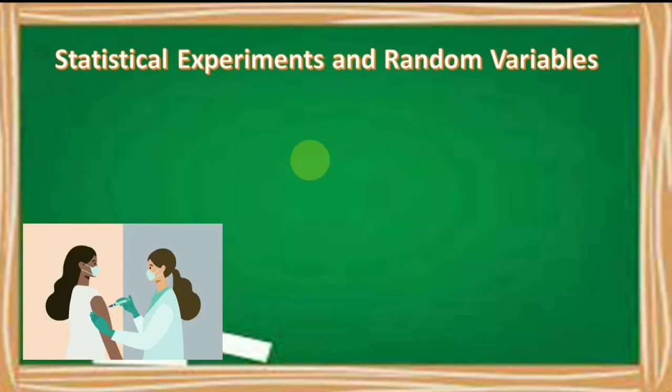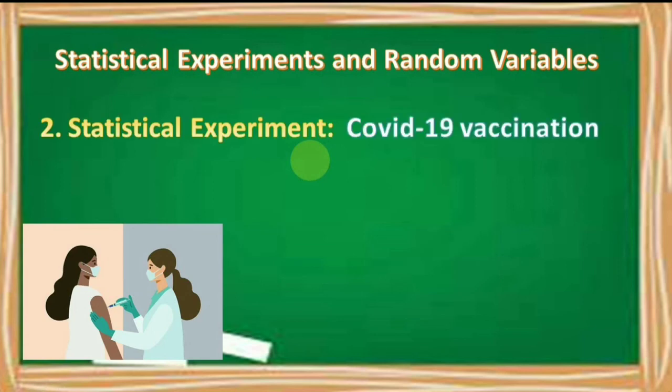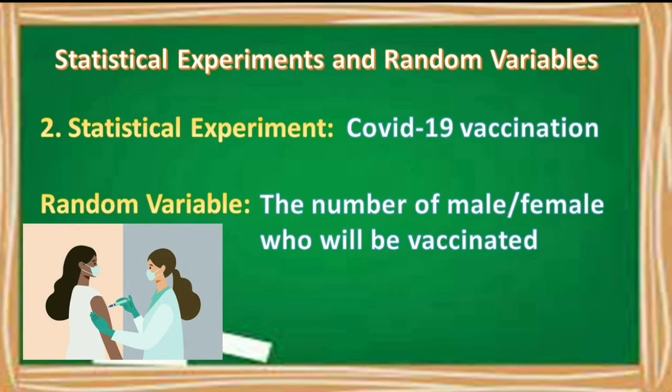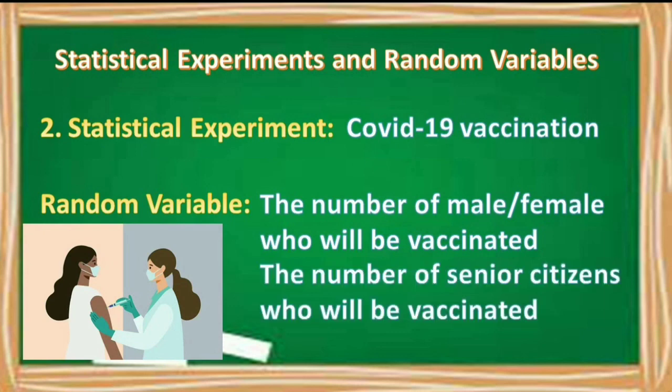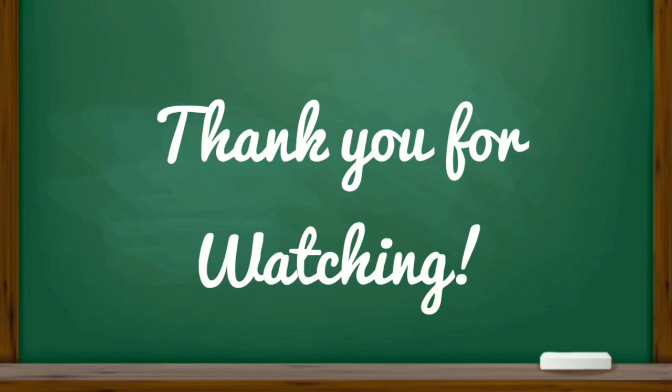Okay. Another statistical experiment that we can cite is the COVID-19 vaccination. And what could be the random variable that can be associated to this one? It could be the number of male or female who will be vaccinated. So among those persons who will undergo vaccination, ilan kayang mga lalaki or pwedeng ilang mga babae ang mababakunahan? Or it can also be the number of senior citizens who will be vaccinated. Ilang mga senior citizens ang mababakunahan? So let's continue.